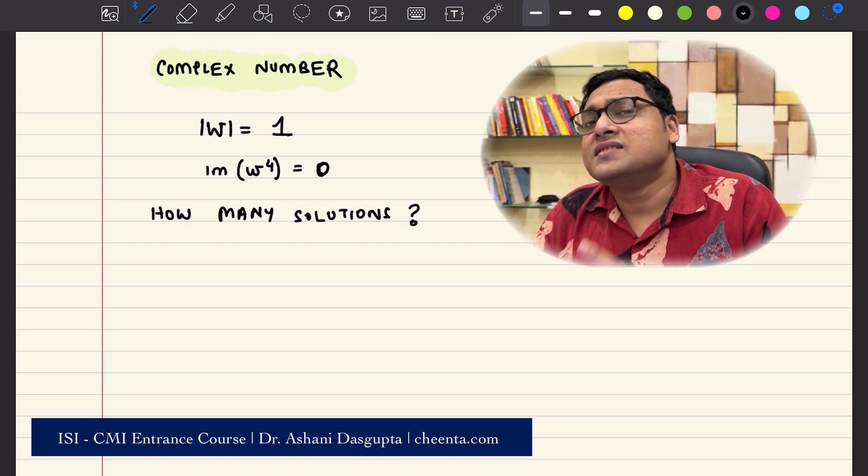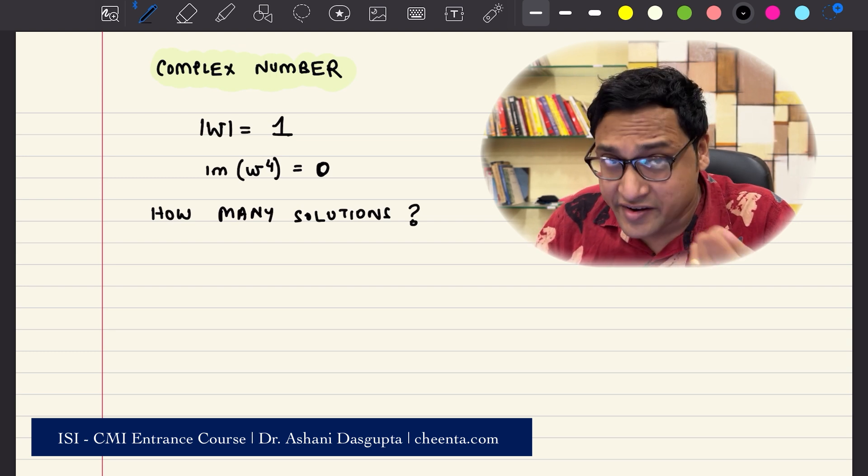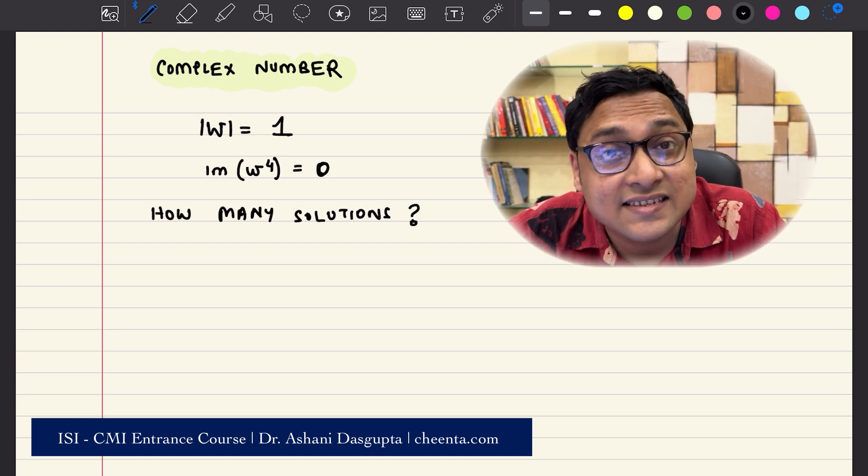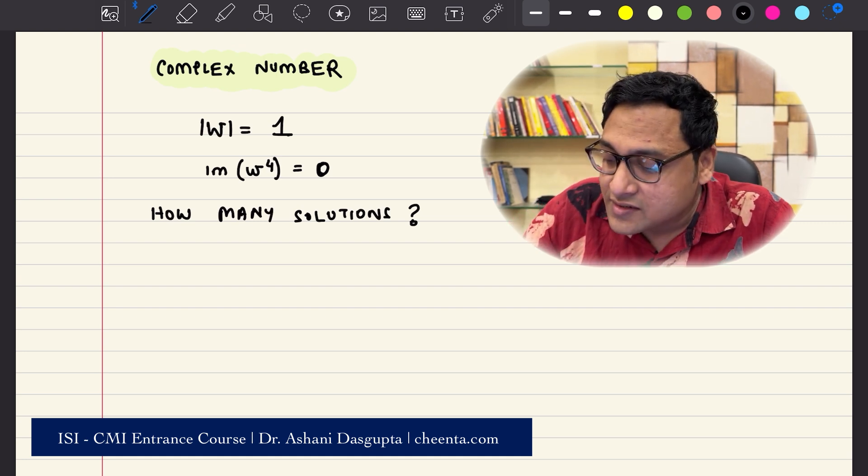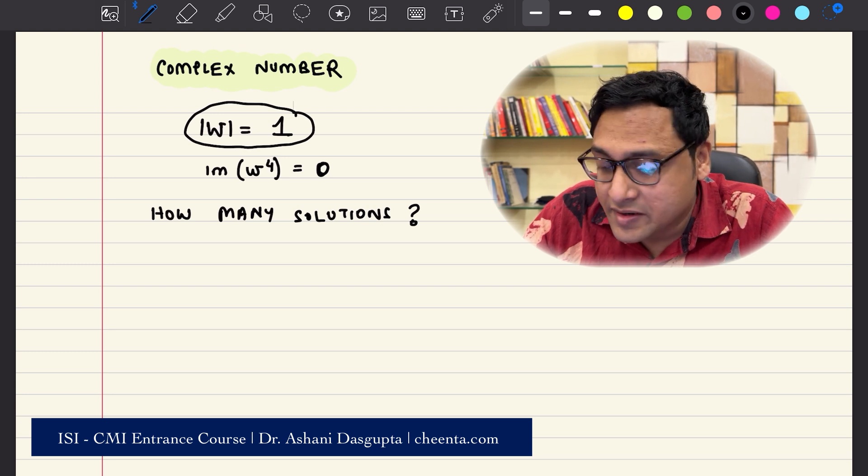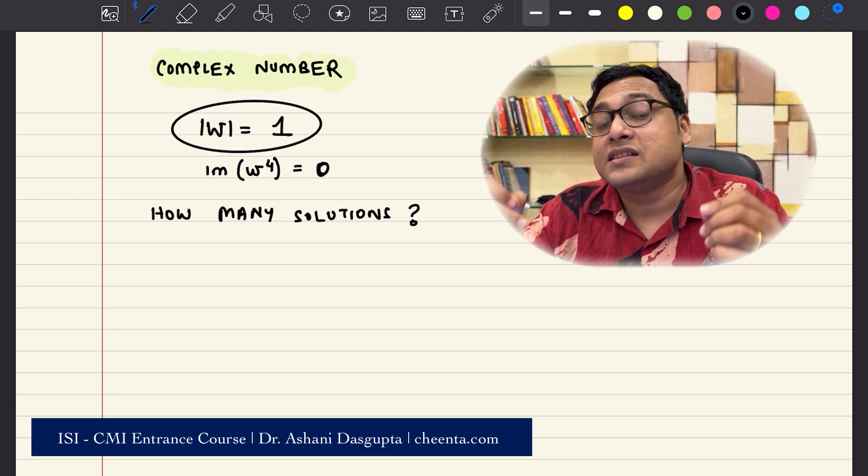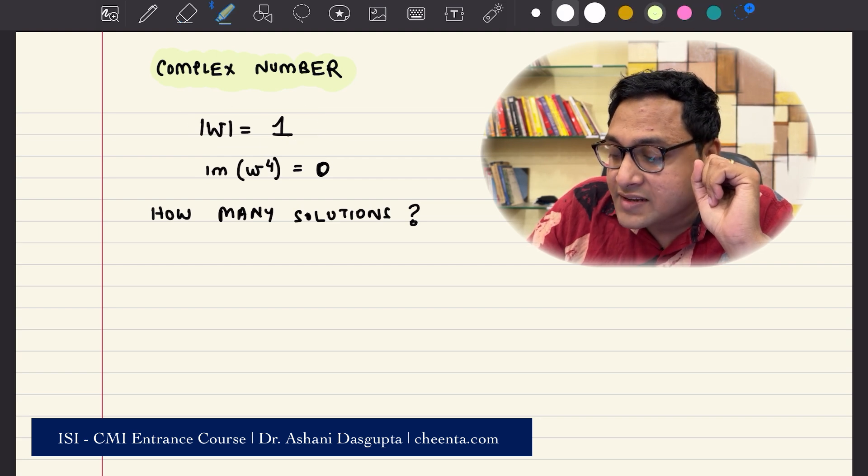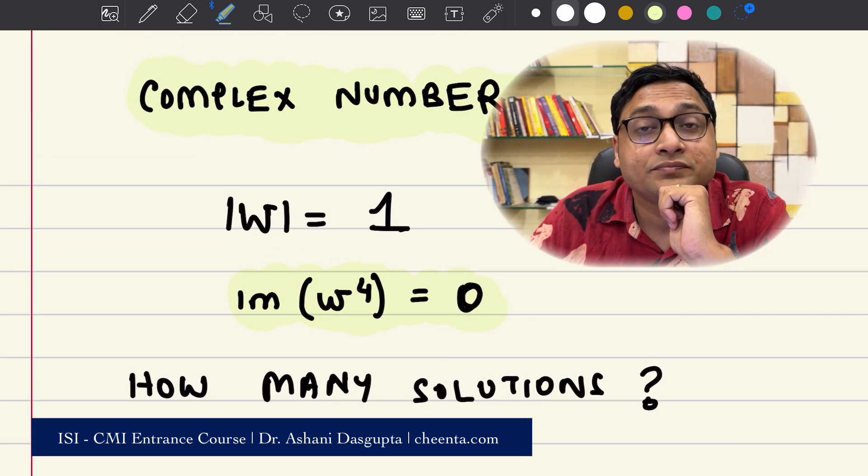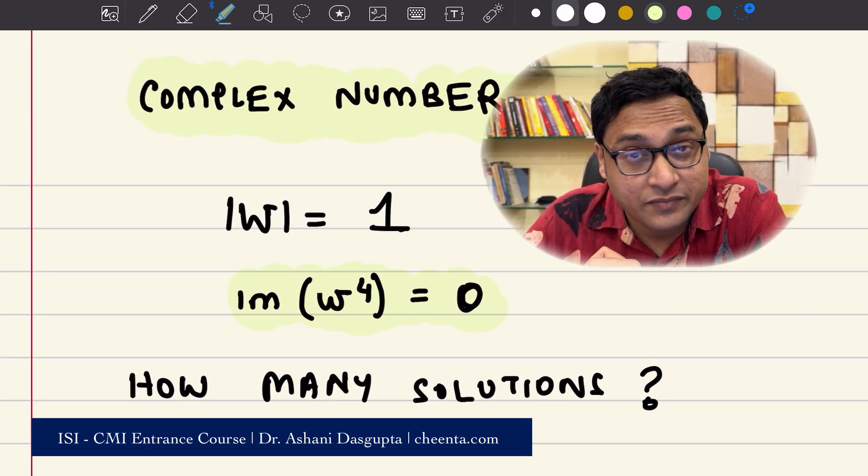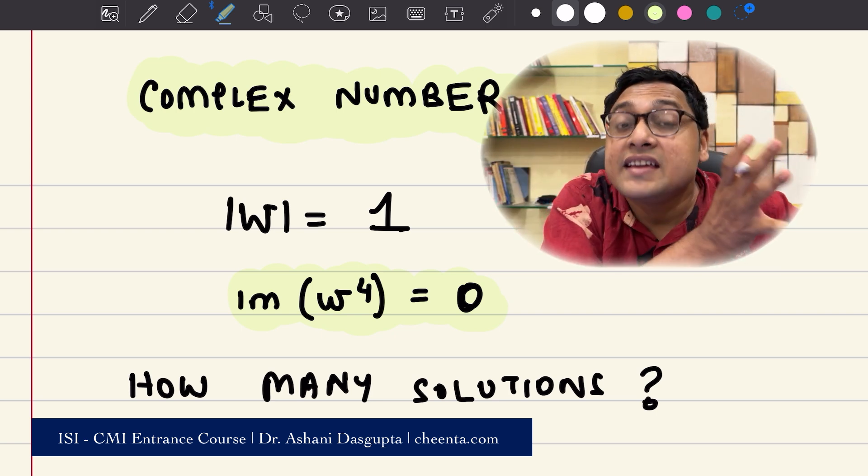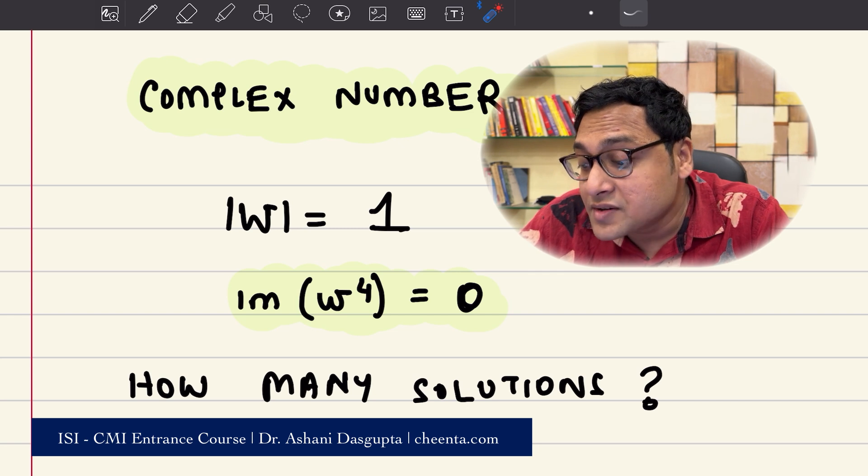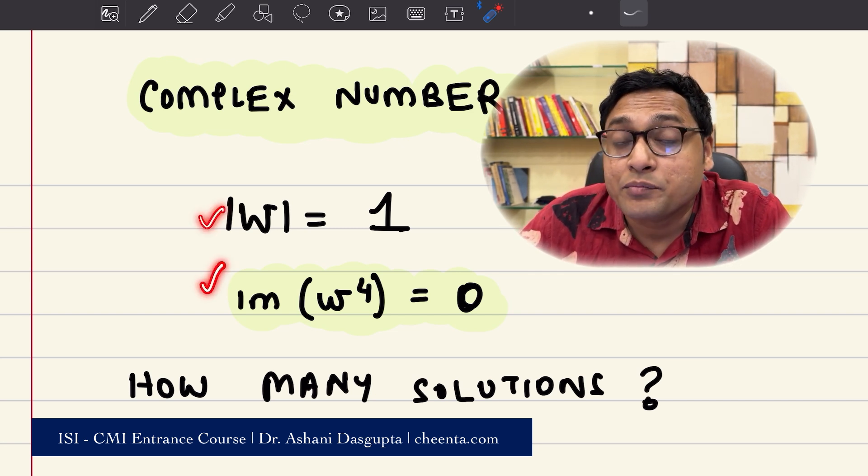Simultaneous equation means there are two equations in a complex variable, and we want to find out all complex numbers that satisfy these two equations. What are the two equations? The first one is omega, the variable in complex numbers. The absolute value of omega is 1. The second condition is imaginary part of omega to the power 4 is equal to 0. If you raise omega to the power 4 and take only the imaginary part, you will get 0. So the question is, how many complex numbers are there that satisfy both of these conditions?